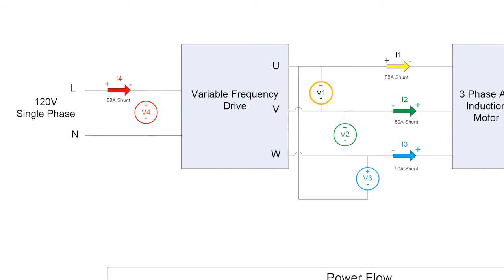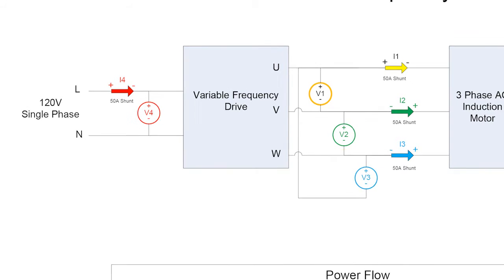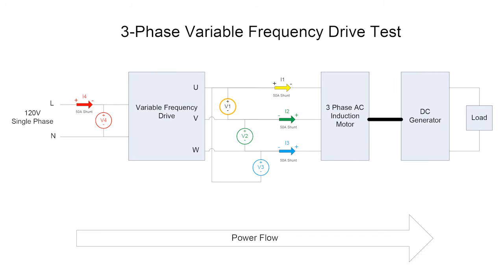I've got my power analyzer wired both on the front end, looking at the 120-volt single phase line in, measuring it with a 50-amp internal shunt and a voltage measurement, and these are all isolated current and voltage measurements. And then on the output, I'm measuring U to V, V to W, W to U as a delta wiring configuration, measuring with each one of the voltage inputs and current inputs one, two, and three. Again, these are 50-amp internal shunts.